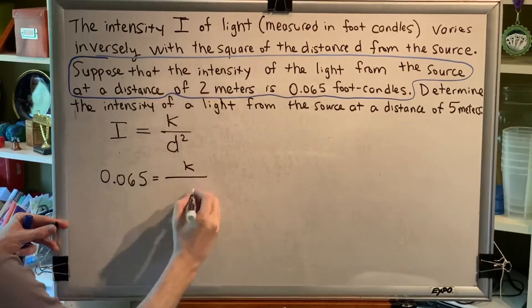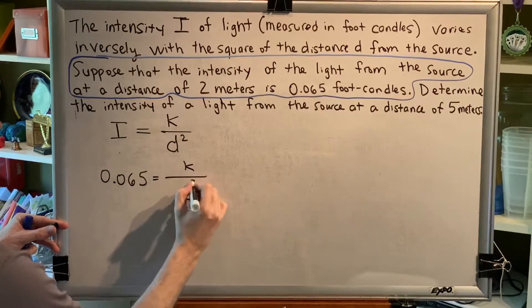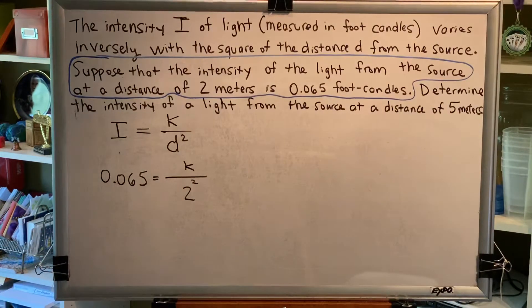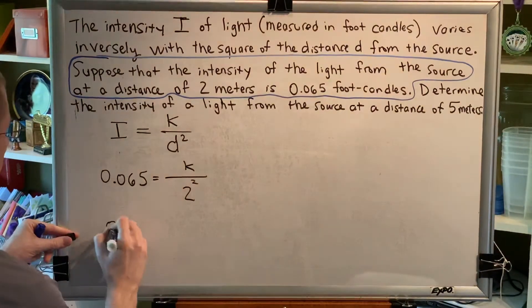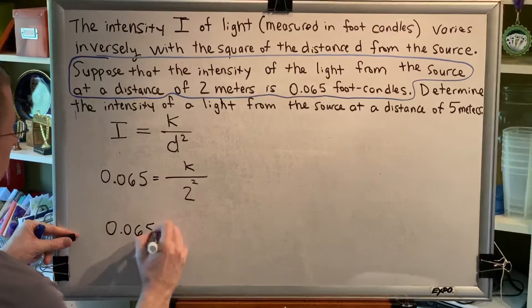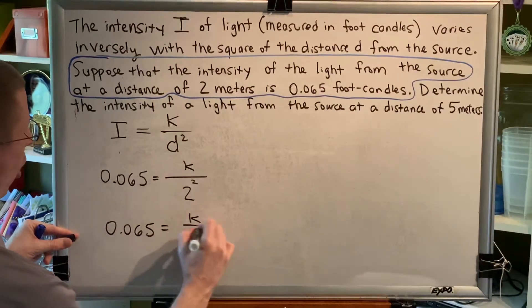D is 2. And, of course, because the equation says D squared, we're going to write 2 squared. All right, now we proceed to solving this problem. So, we get 0.065 equals K over 4.